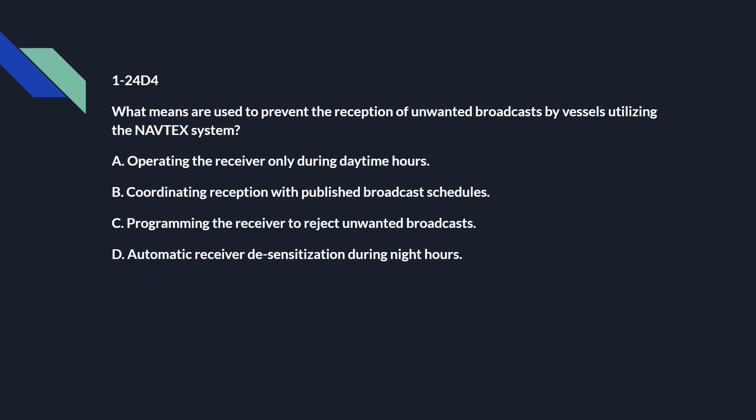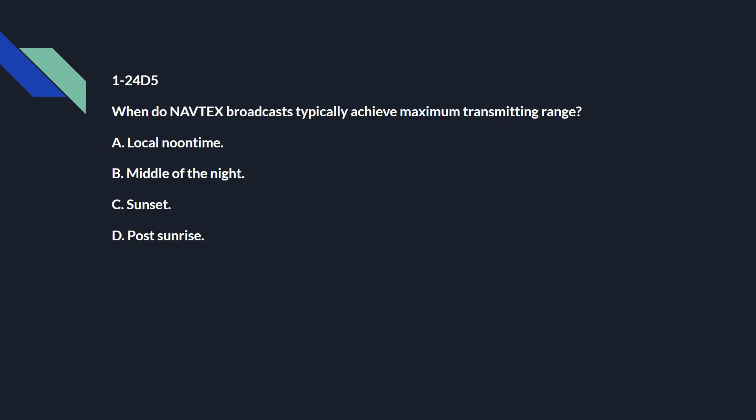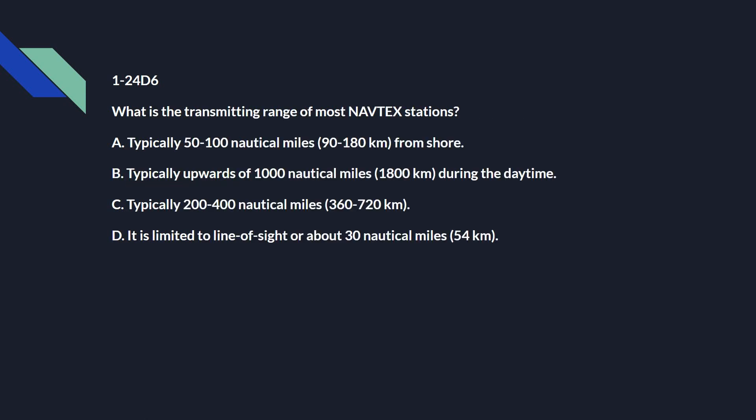1-24 Delta 4: What means are used to prevent the reception of unwanted broadcasts by vessels utilizing the Navtex system? C: programming the receiver to reject unwanted broadcasts. 1-24 Delta 5: When do Navtex broadcasts typically achieve maximum transmitting range? B: middle of the night. 1-25 Delta 6: What is the transmitting range of most Navtex stations? C: typically 200 to 400 nautical miles, also 360 to 720 kilometers.